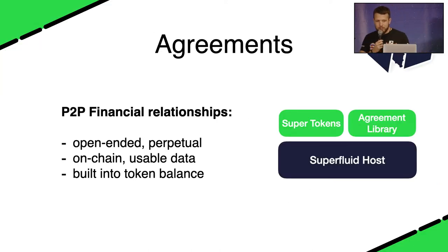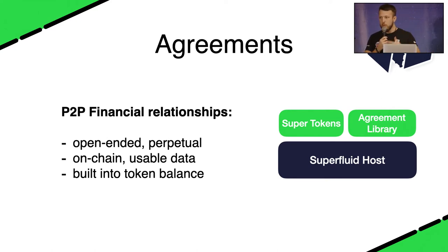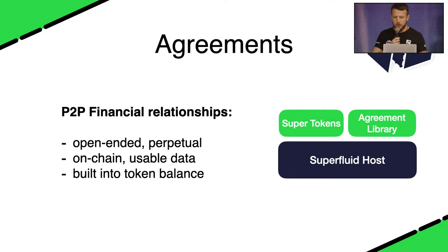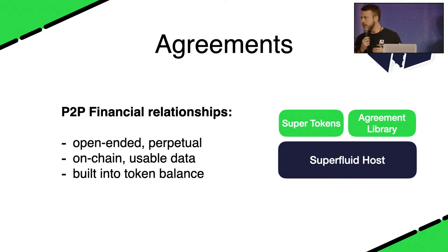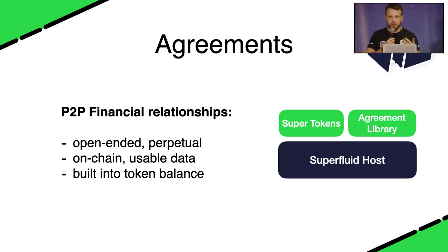We have a primitive called agreements, which are basically ongoing peer-to-peer financial relationships — open-ended relationships between accounts which allow you to transfer funds in new ways. Money streaming is one of them, and there's more. The important thing is that this is all happening on-chain, which means all the agreement information is available to use in applications. For example, if your business is receiving streaming subscriptions, you can build a lending application which knows exactly how much that address is receiving every second. The agreements are built into the user's token balance.